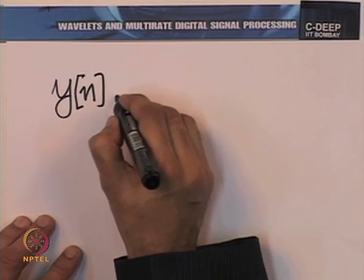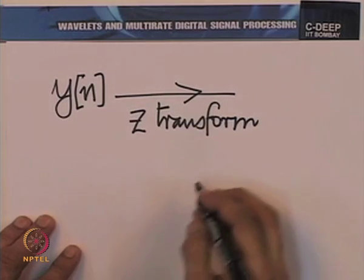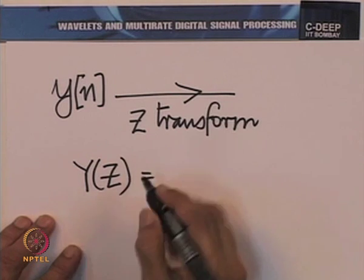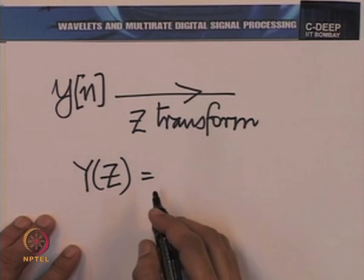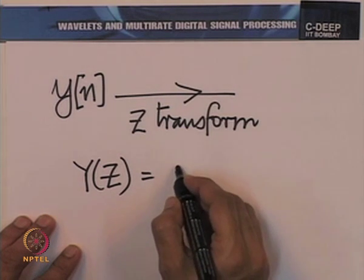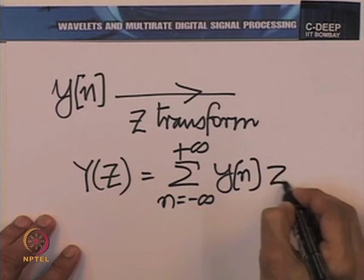I shall recapitulate a few concepts from discrete time processing to refresh our memories. Recall that if we have a sequence y of n, its Z-transform is described by Y of z — we use the small letter to denote the sequence in time and the corresponding capital letter to denote the sequence in the z-domain or frequency domain. Y of z is the summation, n going from minus to plus infinity, of y(n) times z raised to the power minus n.